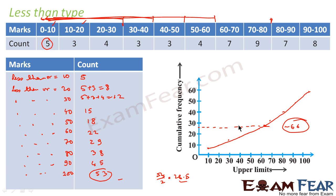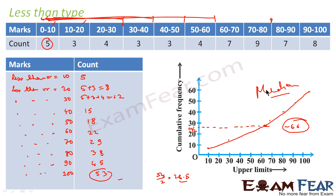To summarize: draw the less than type graph, find n by 2, then draw a line parallel to the x-axis from that value. Where it touches the graph gives the median. In this case the median is 66. Now let us draw the more than type graph using the same data.